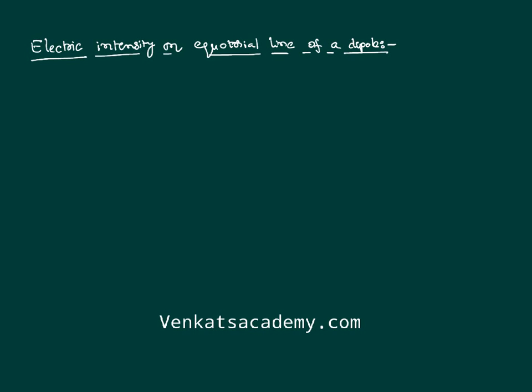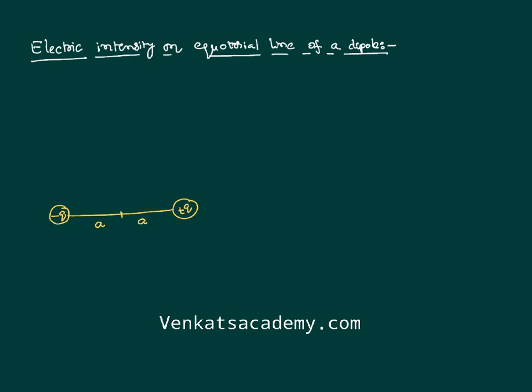An electric dipole is a combination of two charges equal in magnitude but opposite in sign, like minus q and plus q, separated by a small distance generally treated as 2a, where a is measured from the centre of the dipole. Now I want to talk about a line called the equatorial line.